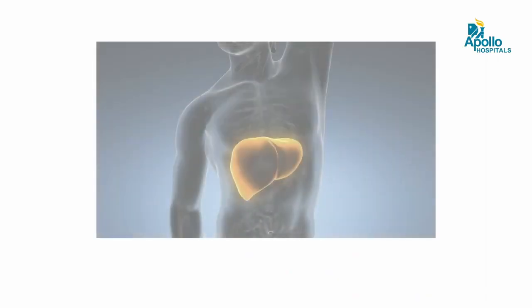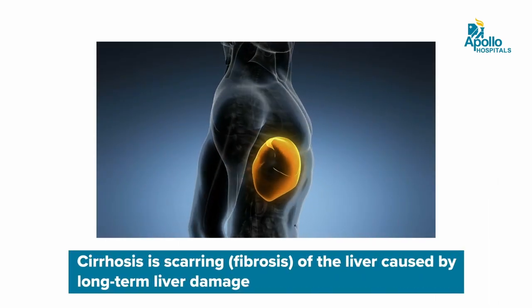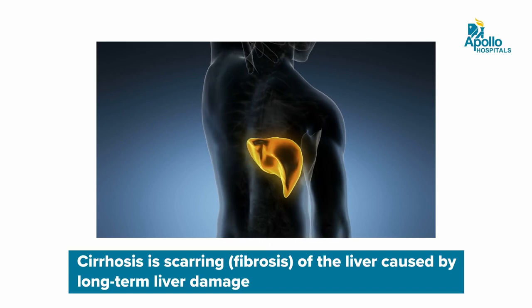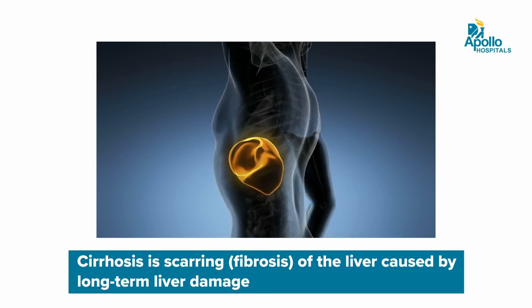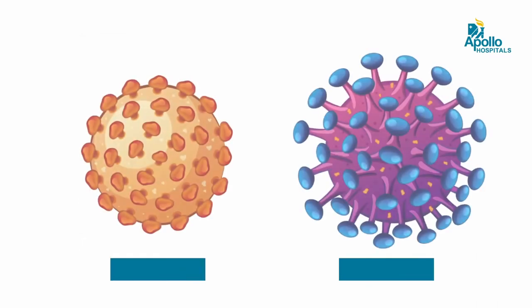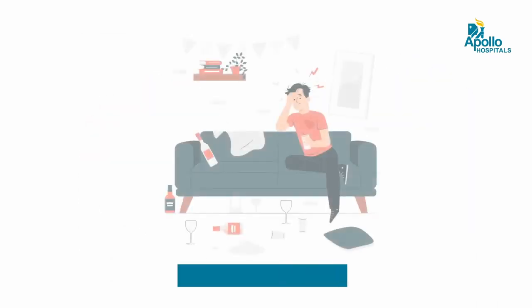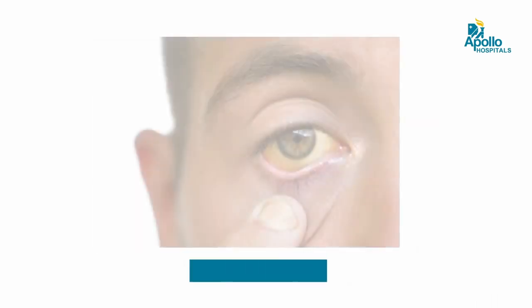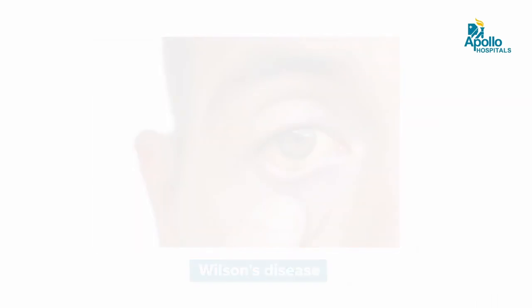What is cirrhosis of the liver? Cirrhosis means anything that damages the liver over a period of time, causing the liver tissue to become hard, fibrosed, or scarred. This scar will ultimately lead to the formation of cancer in the liver. Common causes of cirrhosis include hepatitis — a viral infection caused by hepatitis B and C virus — alcohol consumption, and hereditary conditions such as hemochromatosis and Wilson's disease.